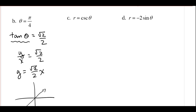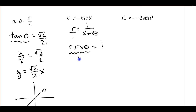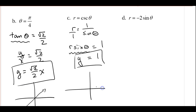For the next example, r = csc(θ). Let's change this to 1/sin(θ). Cross-multiplying gives r·sin(θ) = 1. Since r·sin(θ) = y, we get y = 1 — a horizontal line at y = 1.